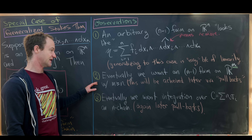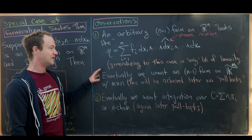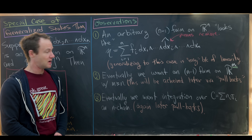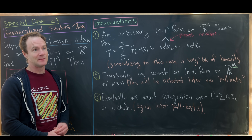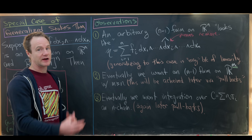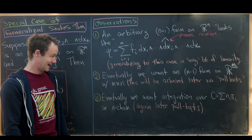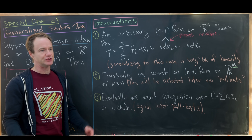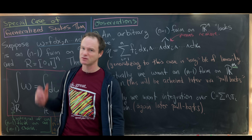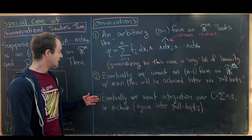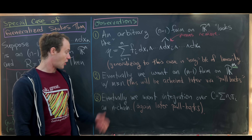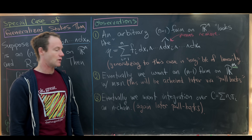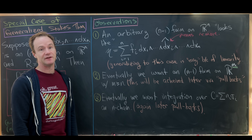Our second simplification is based on the fact that we eventually want an n minus 1 form. So omega will be an n minus 1 form on R^m, where m is bigger than or equal to n. That's because we want an n chain in R^m instead of an n chain in R^n. This will be achieved later via the notion of a pullback, which we'll do in a forthcoming video, and this will actually make this result quite a bit more powerful than it originally seems. Eventually we also want to integrate over an arbitrary n chain instead of this n-dimensional rectangle or square, but again that's going to be achieved later with pullbacks.